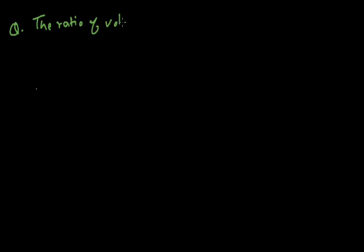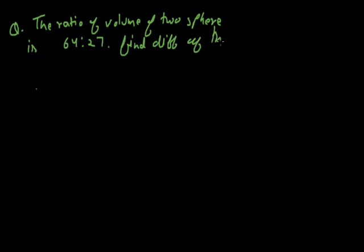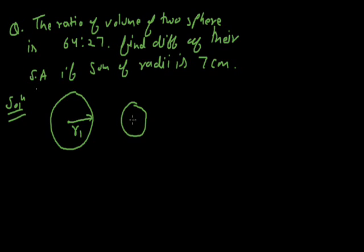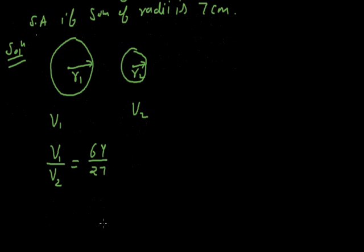Problem 2: The ratio of volumes of two spheres is 64:27. Find the difference of their surface areas if the sum of their radii is 7 cm. We have two spheres with radii r1 and r2. The ratio of volumes V1/V2 = 64/27. Using the formula V = 4/3 π r³, the ratio gives (4/3 π r1³)/(4/3 π r2³) = 64/27.